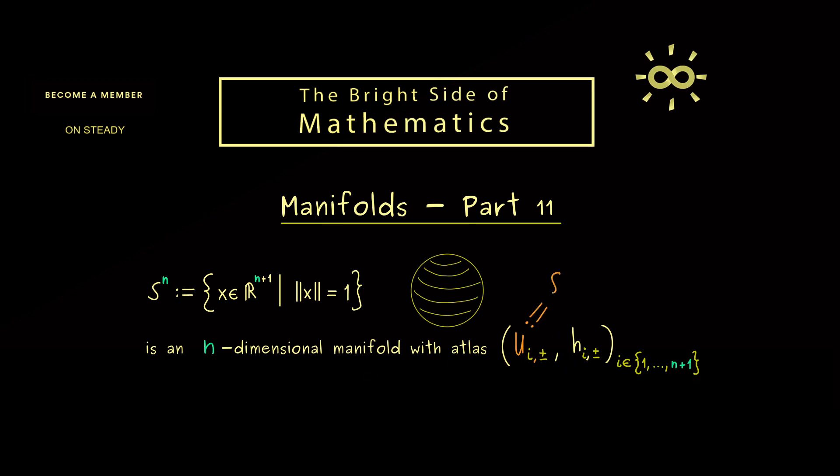Indeed, in the last video we explicitly chose an atlas with open sets U and charts h. Maybe I just tell you again how the open sets were defined. Here U_i^{±} is simply given by all the points in R^{n+1} where the ith component is positive or negative. So one possibility to write this down would be to say that ±x_i is greater than zero. So you see this is just a generalized hemisphere.